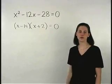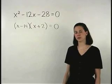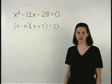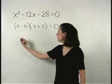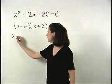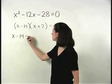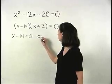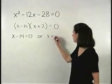So if x minus 14 times x plus 2 equals zero, then either x minus 14 equals zero, or x plus 2 equals zero.